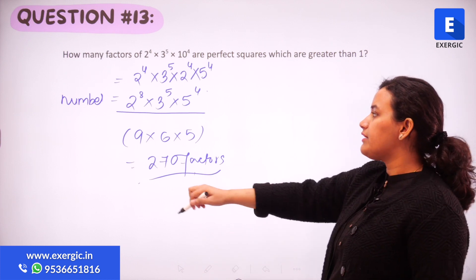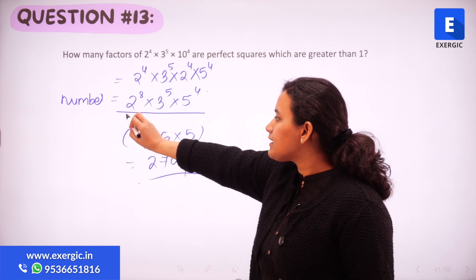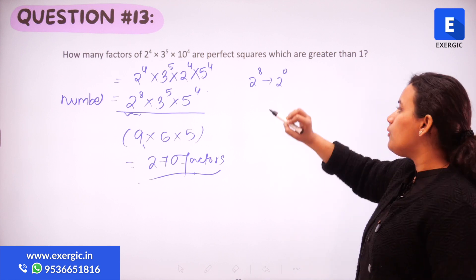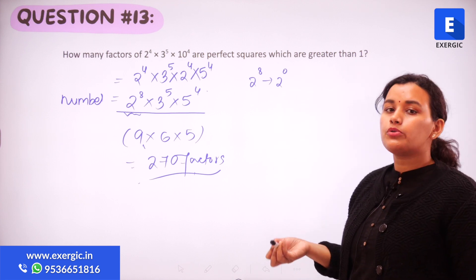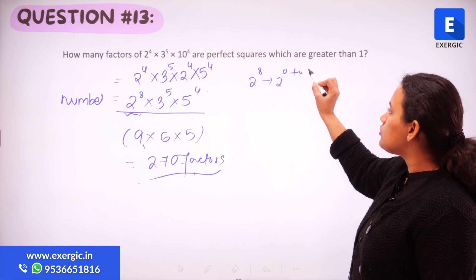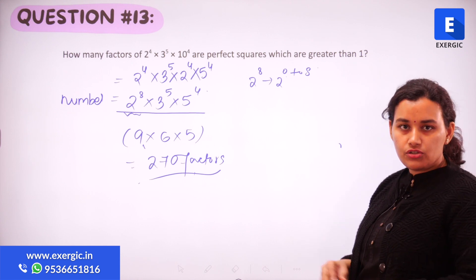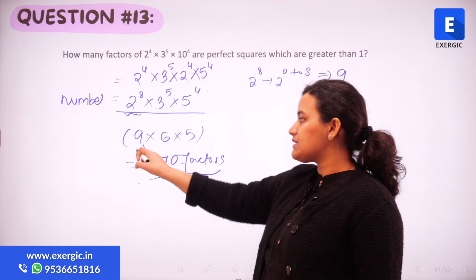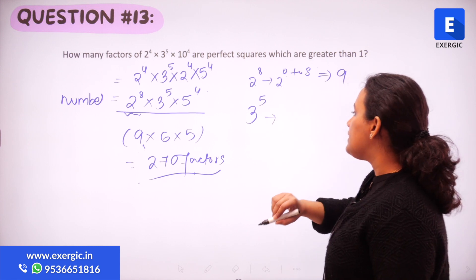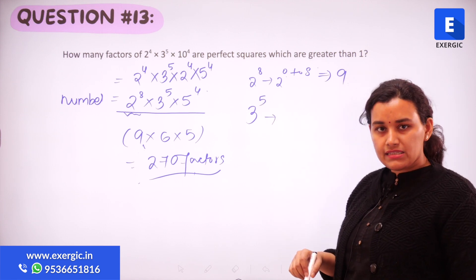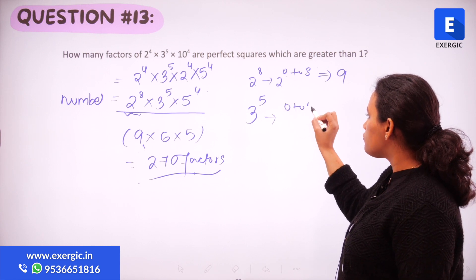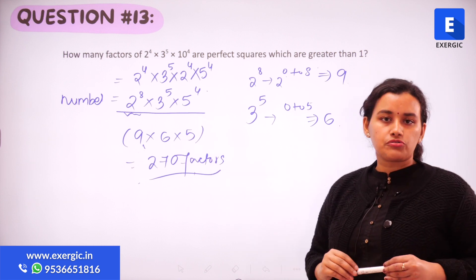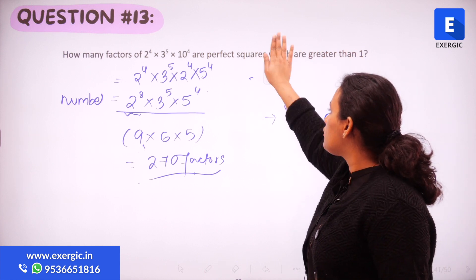How do we arrive at this 270? For 2 raised to the power 8, the power of 2 can take all values from 0 to 8, which is 9 values — that's where the 9 comes from. Similarly, for 3 raised to the power 5, the power of 3 can take values from 0 to 5, giving 6 values. For 5 raised to the power 4, the power can take 5 values. That's how we find the total number of factors.